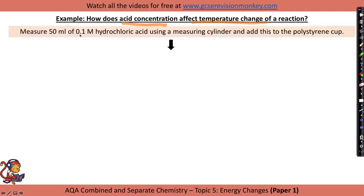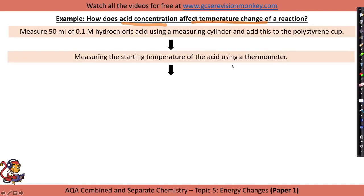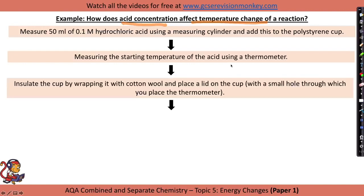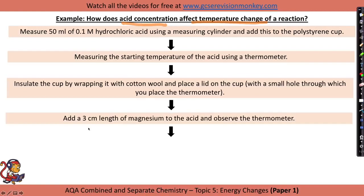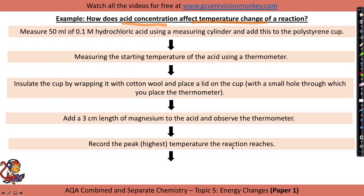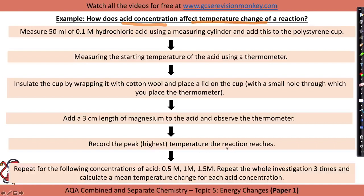I'm going to go through a step-by-step example whereby we change the concentration of an acid and see how that affects the temperature change of a reaction. Measure 50 mils of 0.1 molar hydrochloric acid using a measuring cylinder and add this to the polystyrene cup. Measure the starting temperature of the acid using a thermometer. Insulate the cup by wrapping it with cotton wool and placing a lid on it. Add a 3 centimetre length of magnesium to the acid and observe the thermometer. Record the highest temperature the reaction reaches, and repeat this for concentrations of 0.5 molar, 1 molar, and 1.5 molar.